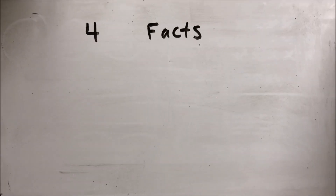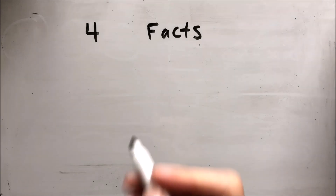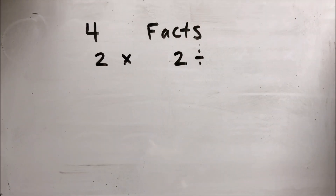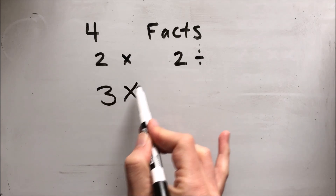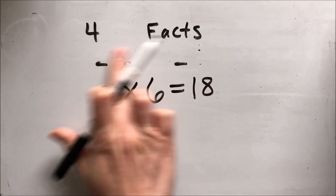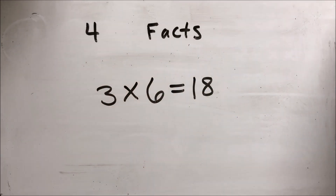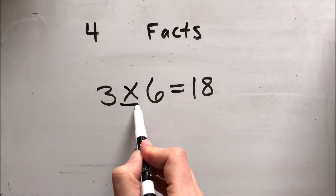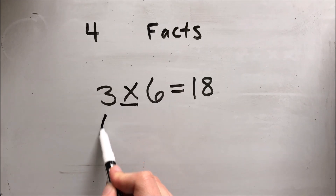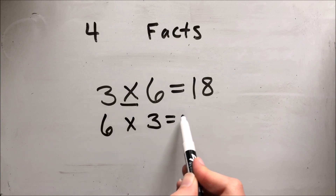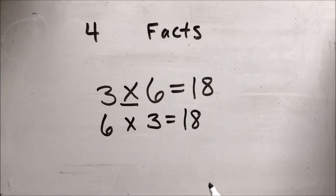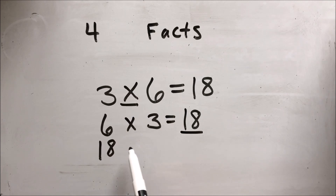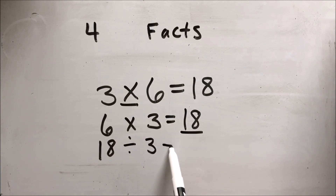Remember, when we're talking about fact families, each fact family has to have four facts: two multiplication and two division. So if you're given a fact like three times six equals 18 and asked to choose the facts that are part of the fact family, start with the same operation. We can flip our facts — six times three equals 18. Then we write the inverse: 18 divided by three equals six.